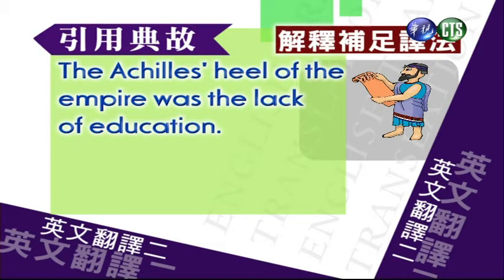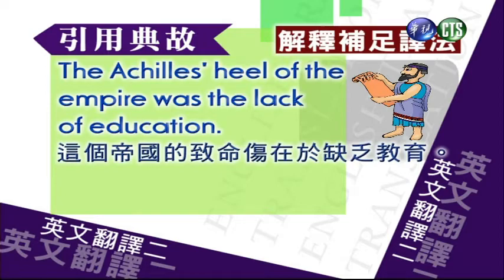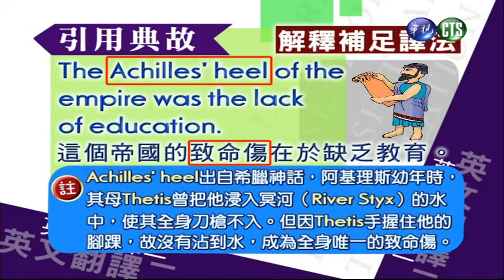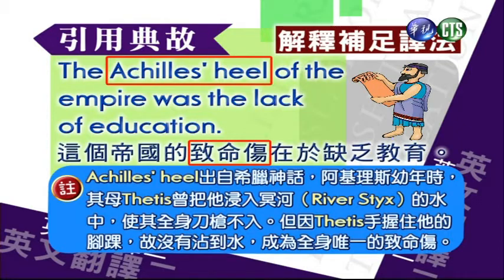The Achilles heel of the empire was the lack of education. 这个帝国的致命伤在于缺乏教育。我们来注释：Achilles heel出自希腊神话。阿基里斯幼年时候他的母亲Thetis曾经把他放入冥河River Styx，使他全身刀枪不入。但是因为Thetis手握住他的脚踝，所以没有沾到水，成为全身唯一的致命伤。所以Achilles heel就是致命伤的意思。